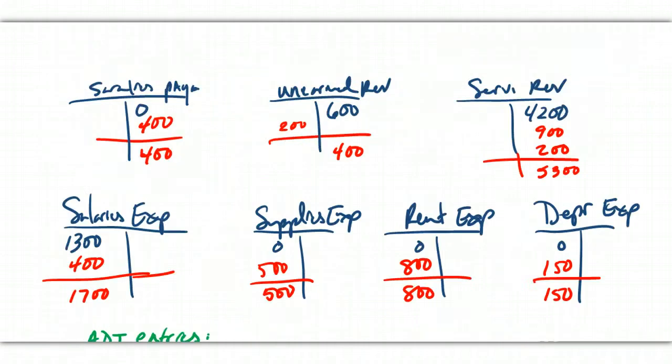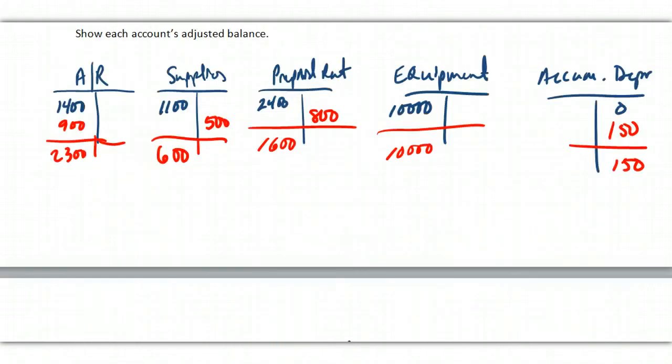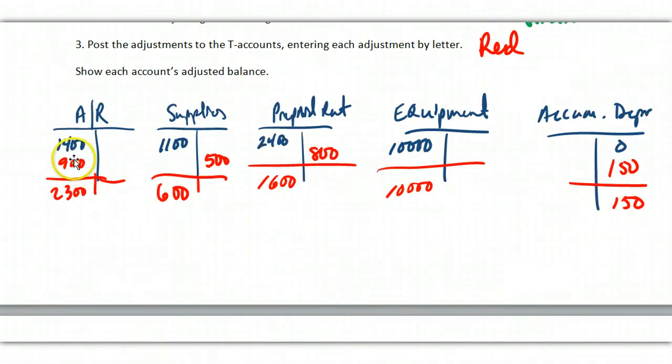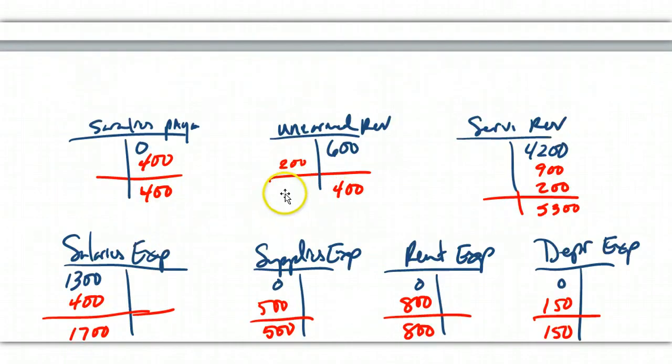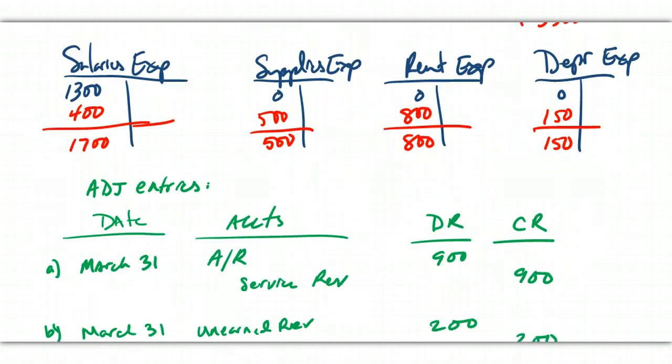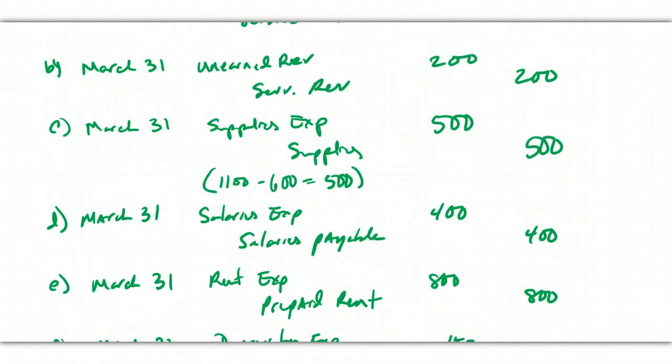So then the last thing is that I post them, and I posted them in red. So debit AR, credit service revenue. Debit AR, it's messy. Here it is, credit service revenue. And then I just went through the rest of that process.